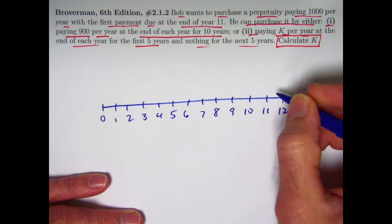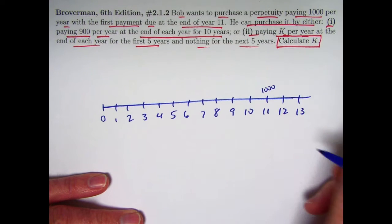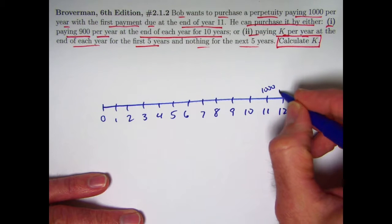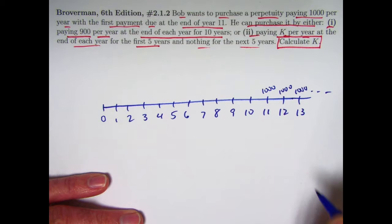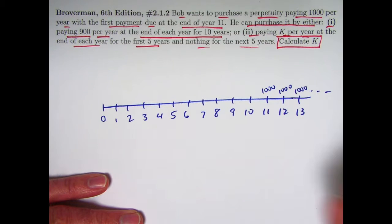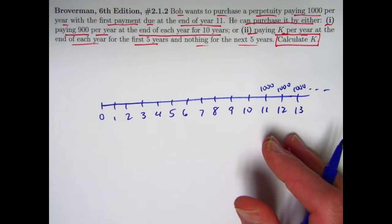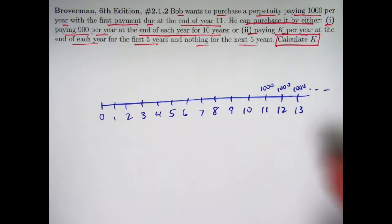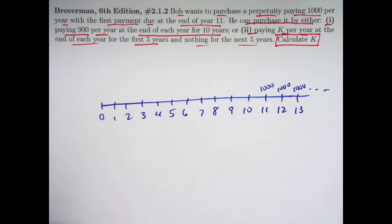It's starting at time 11 that he gets paid $1,000 per year. That's the end of the 11th year. So he's getting paid $1,000 now per year forever. How can the present value of such a thing be finite? Well, it's related to the fact that sums of infinite series can be finite as well, especially infinite geometric series is a common kind of example that comes up here.